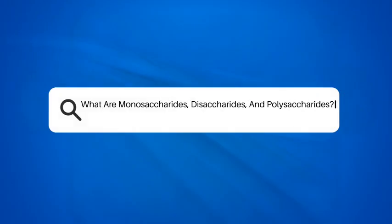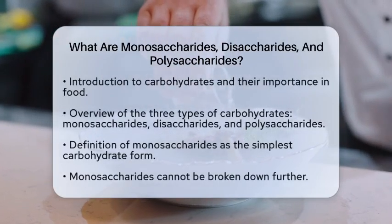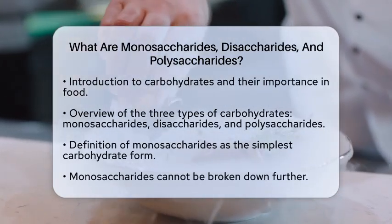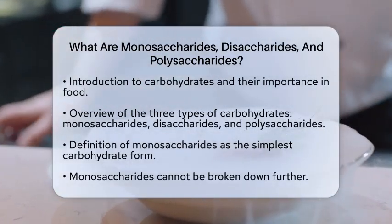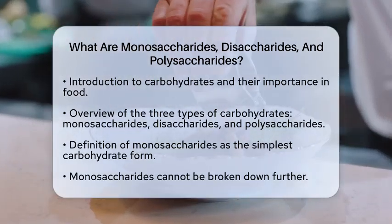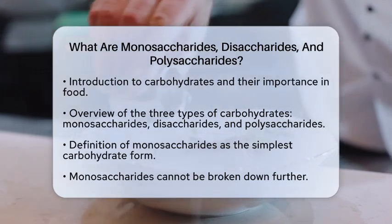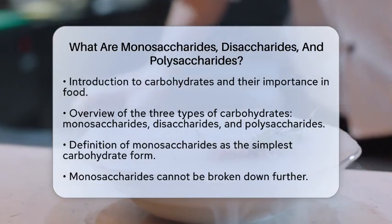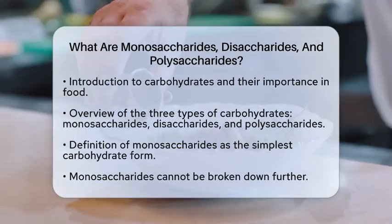What are monosaccharides, disaccharides, and polysaccharides? Have you ever wondered what makes up the carbohydrates in your favorite foods? Today, we are going to break down the different types of carbohydrates — monosaccharides, disaccharides, and polysaccharides. Each type has its own unique structure and function, which is important in the world of organic chemistry and carbohydrate nomenclature. Let's start with monosaccharides.